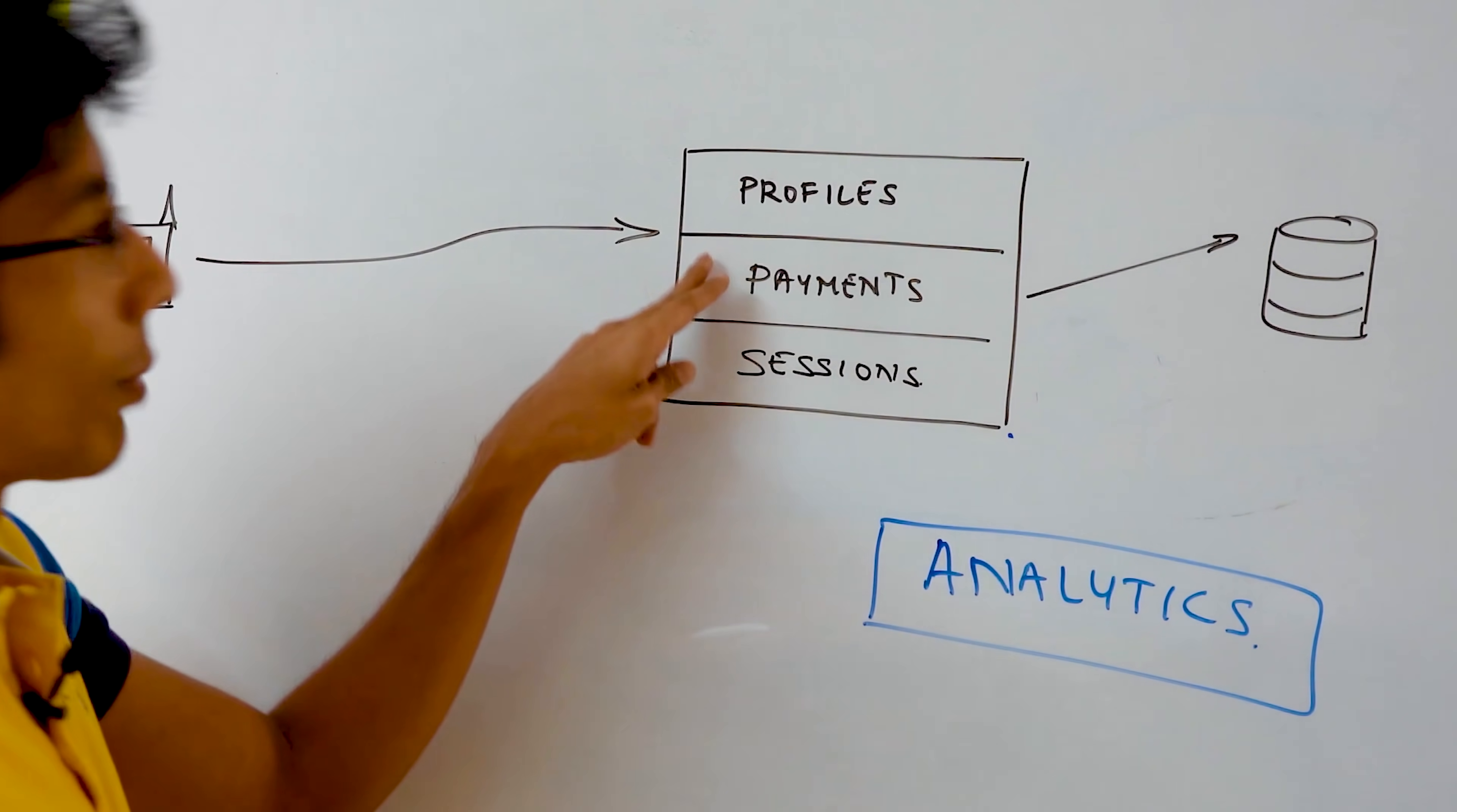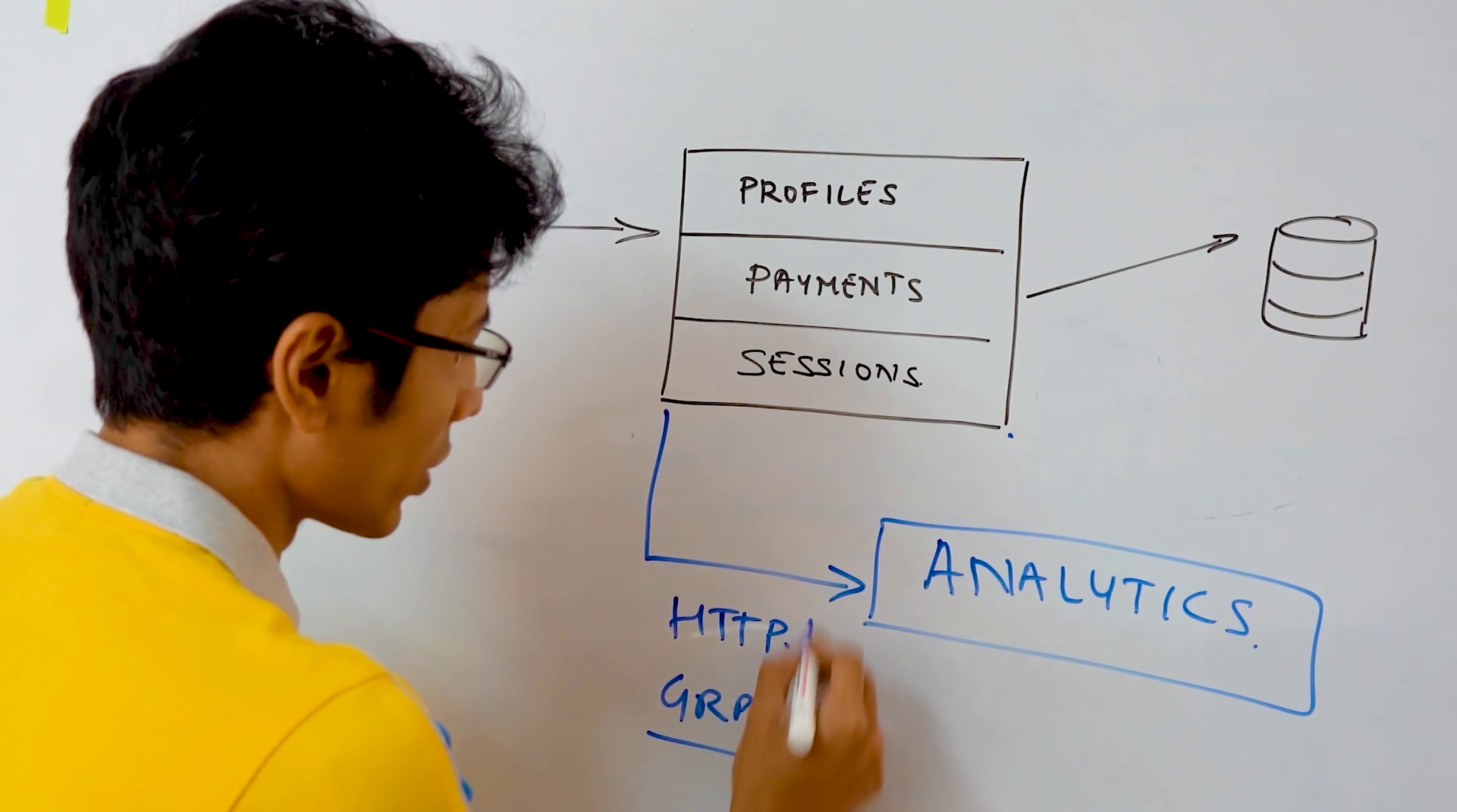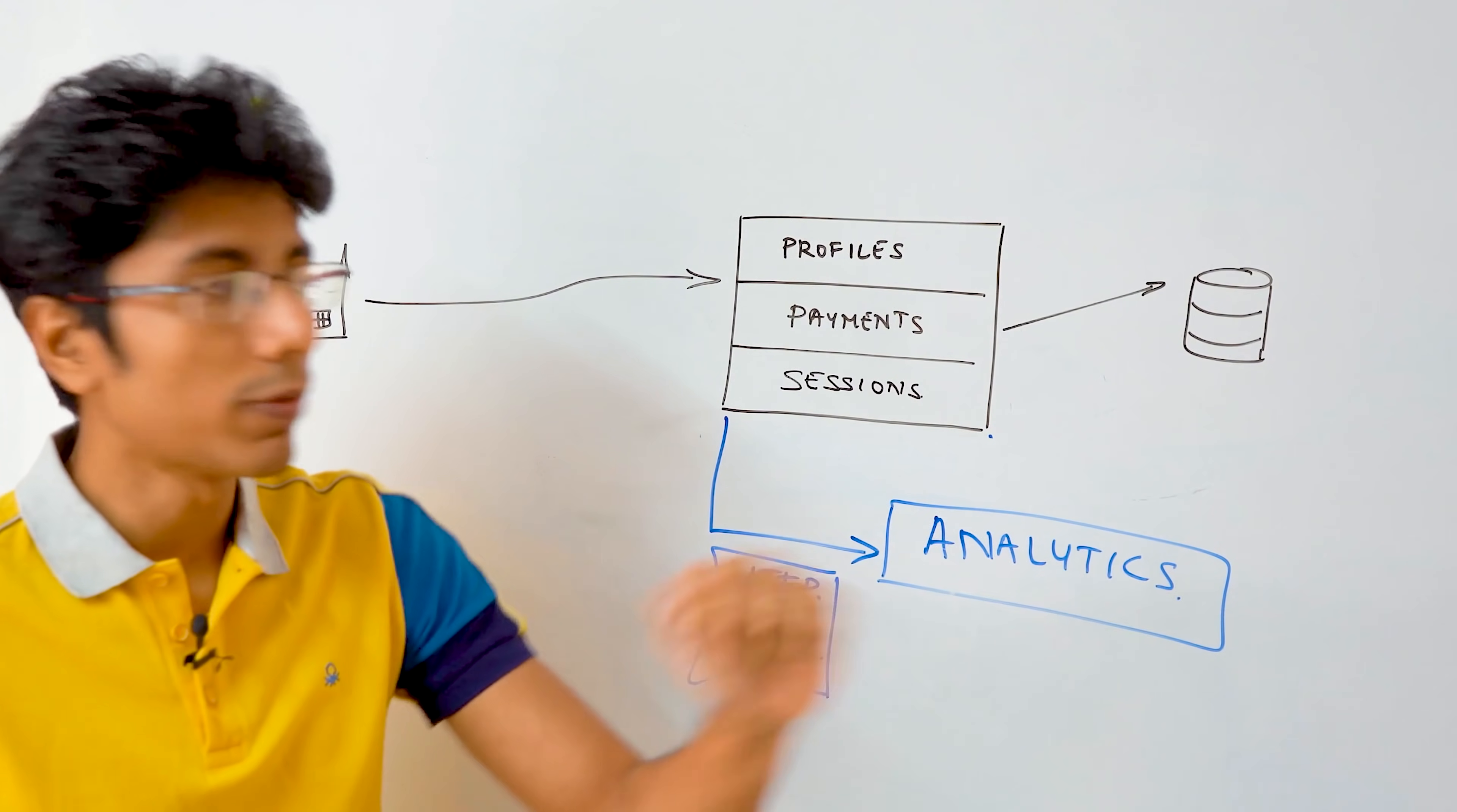And how do we do that? Well, earlier when you were communicating through code, you used to just make a function call. Now you're going to be making this call over a network. So you'll have either HTTP or GRPC or whatever. The network call doesn't really matter. But the treatment of this piece of code, this service is as if it's an external thing. You cannot access any of its functionalities through a function call.